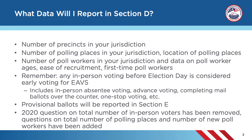As you answer these questions, keep in mind that all people who cast a ballot in person before Election Day should be recorded in this section. Examples of this include in-person absentee voting, advance voting, completing mail ballots over the counter, one-stop voting, or other terminology your state may use. Your state or jurisdiction may have data on in-person early voting to report, even if you do not call it early voting. Please reach out to the EAVS project team for assistance if you are not sure whether you should be reporting data in the questions in Section D that pertain to early voting.